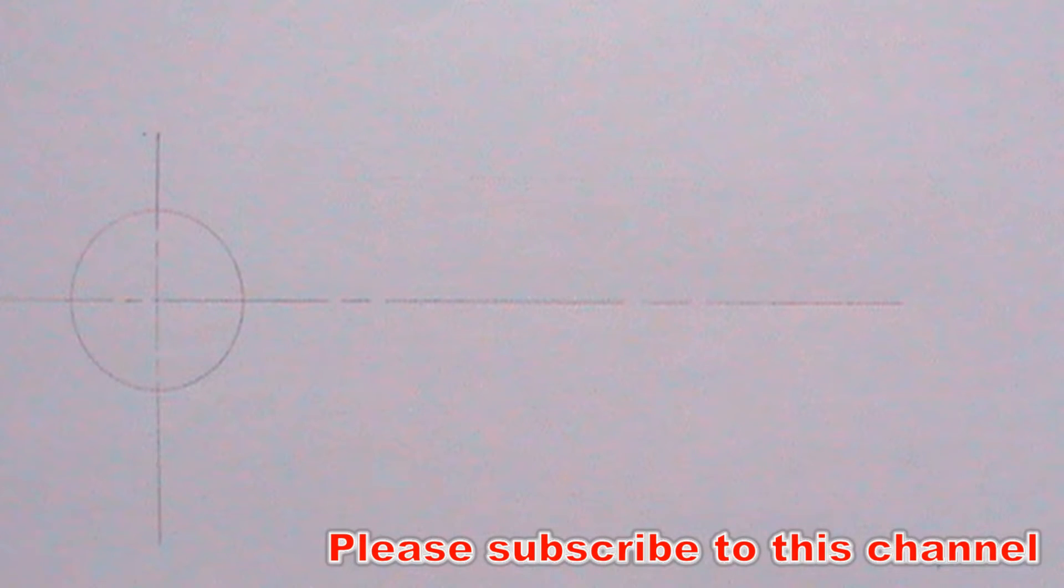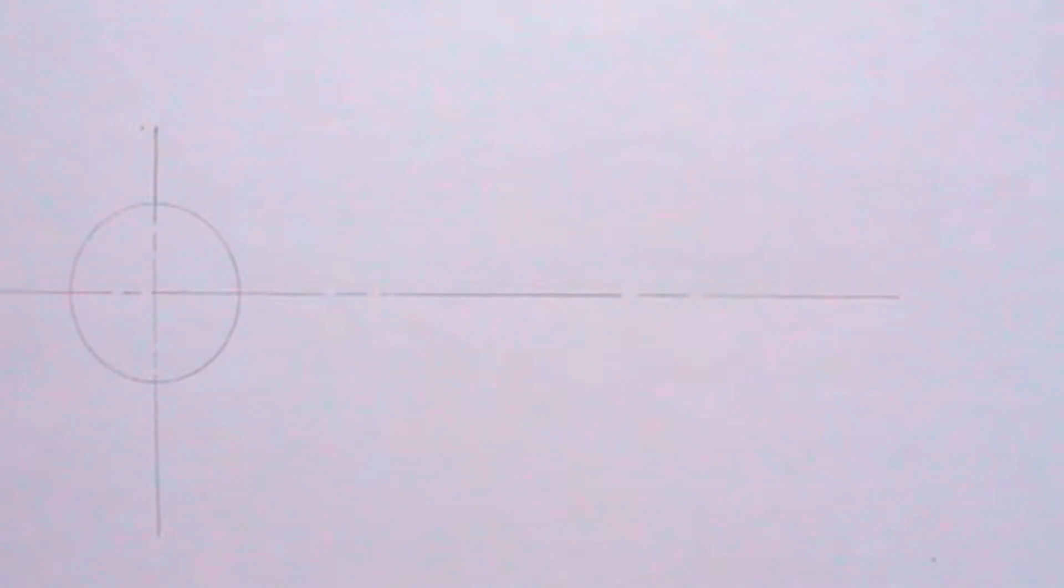I will label the point where the horizontal and vertical line intersect, C. Next, I will mark off 12 points of equal interval of 10 millimeters.